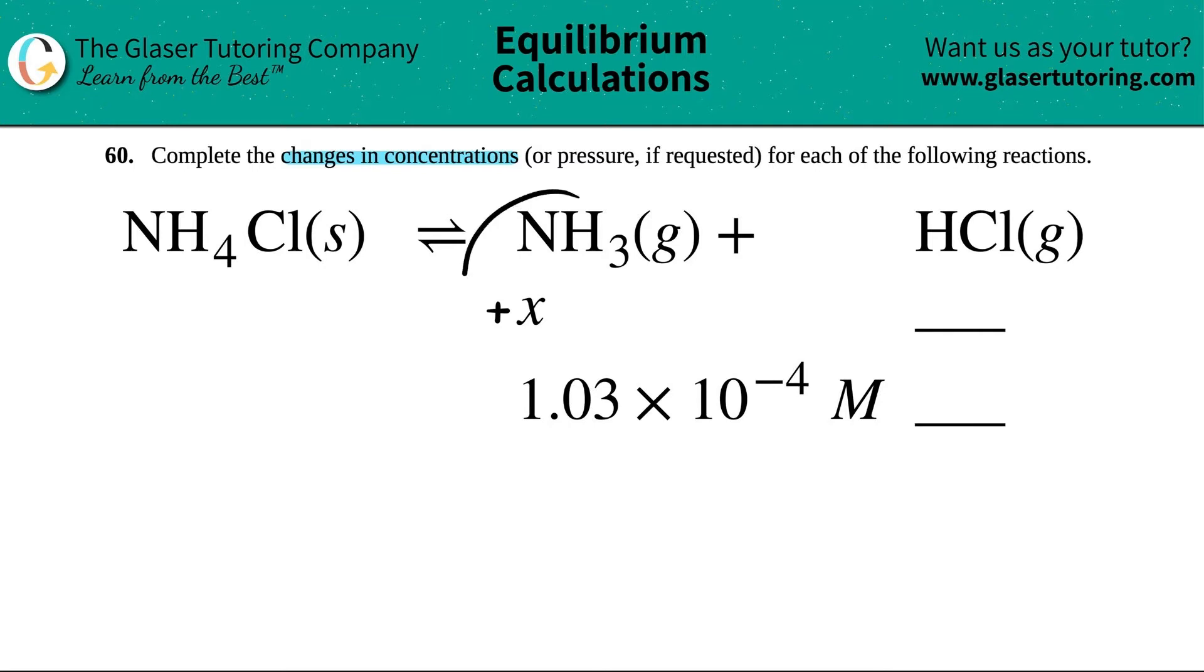Well, like we just said, since NH3 was increasing, I know that HCl has to be a positive value as well. But what's the number that goes here? Well, that comes from the coefficients. There was nothing in front of NH3, that means there was one. And the same thing goes for HCl. There was just one.